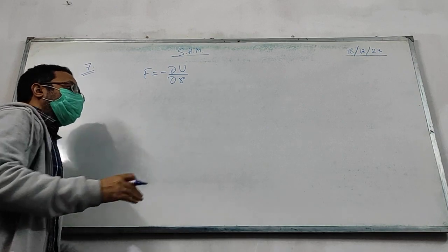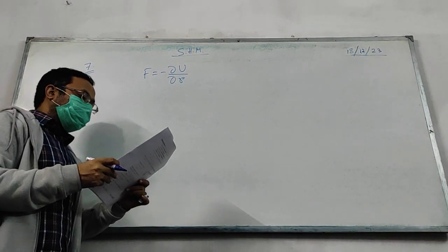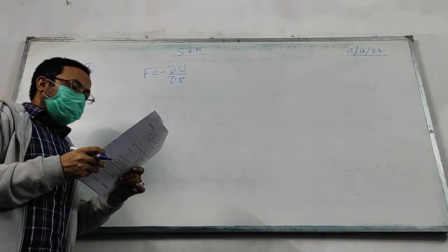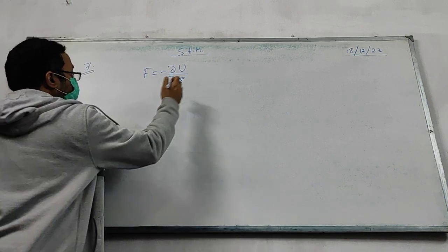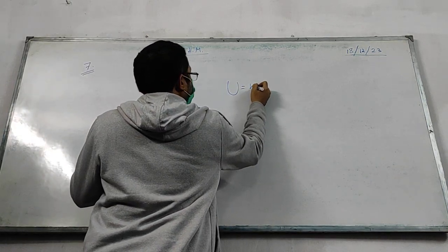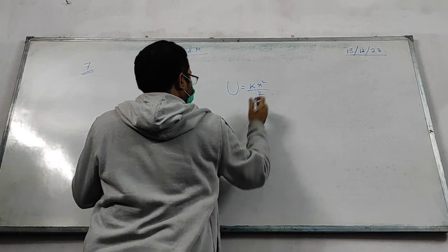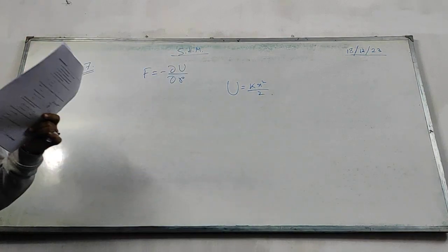Question number 7. Read the question. It says the potential energy of a particle of mass m is given by u equals kx squared by 2. This potential energy is given by k is a constant.